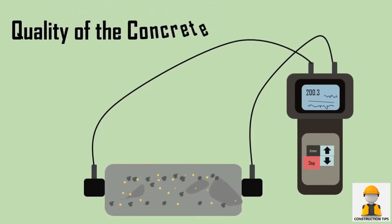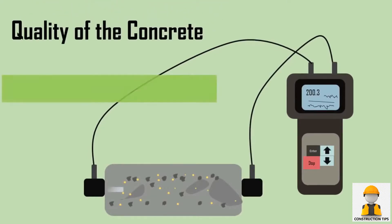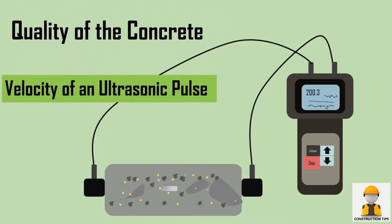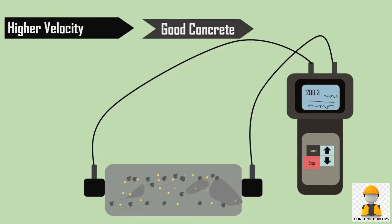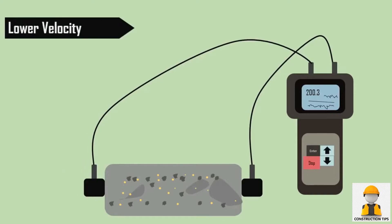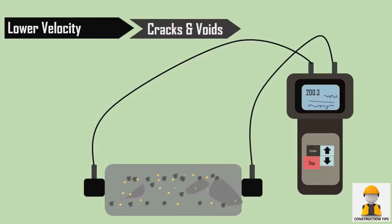The velocity test is generally done to check the quality of the concrete by determining the velocity of an ultrasonic pulse passing through a concrete structure. Higher velocities indicate the concrete is in good quality, and lower velocities indicate the presence of cracks or voids.